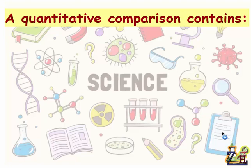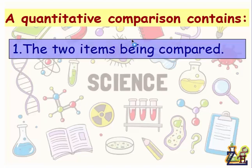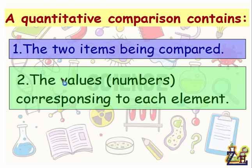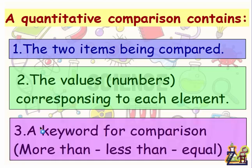Now let's see the second type of comparison: the quantitative comparison. It also contains the two items being compared, the values or numbers corresponding to each element, and a keyword for comparison. Here you have to pay attention — for quantitative comparison we don't use 'while' or 'however'. We have to use other keywords such as 'more than', 'less than', or 'equal', because we are comparing numbers and values.